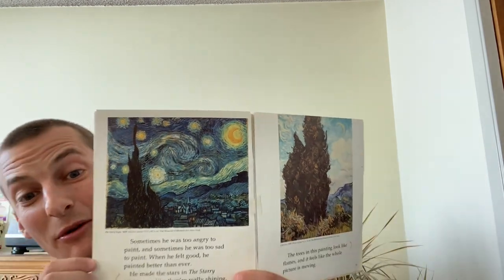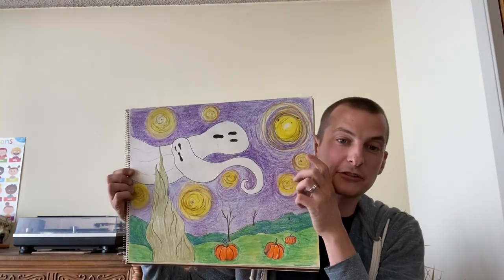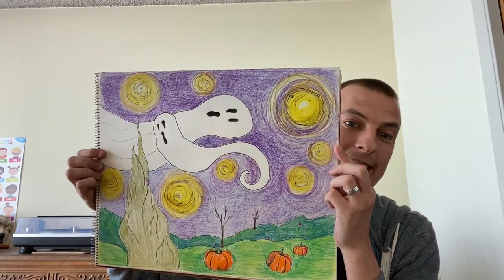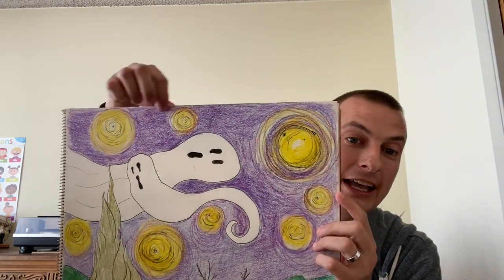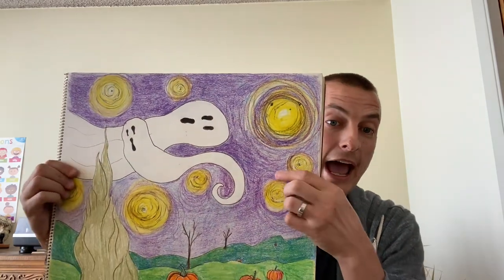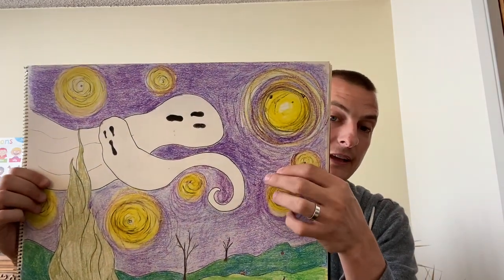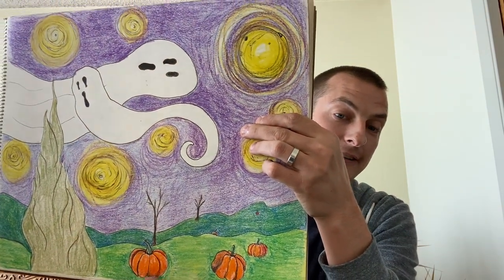So I thought we could take The Starry Night and we could make The Spooky Starry Night. So we could add some stars in our sky like van Gogh did, but you could add some spooky things like ghosts or pumpkins or jack-o'-lanterns.